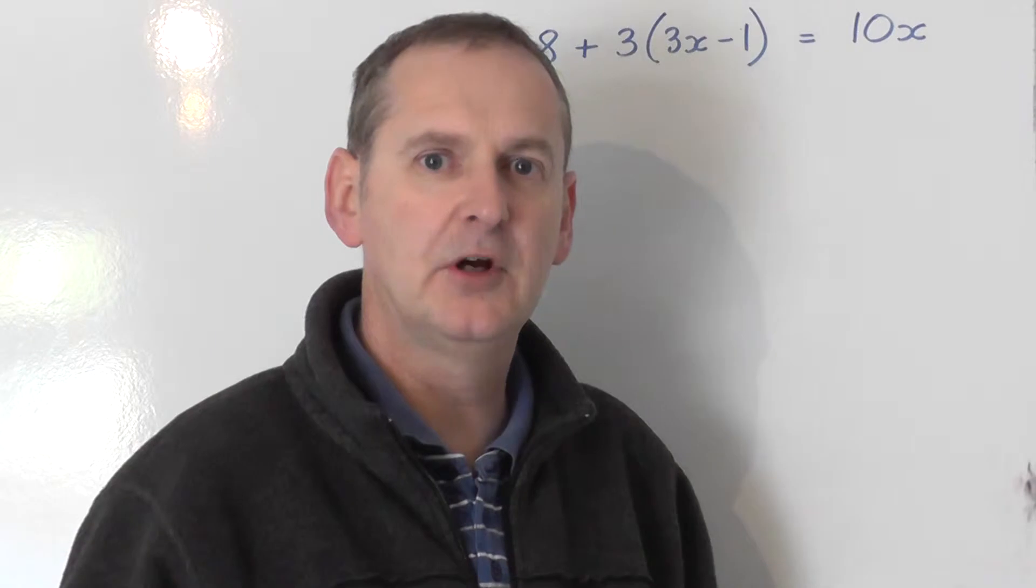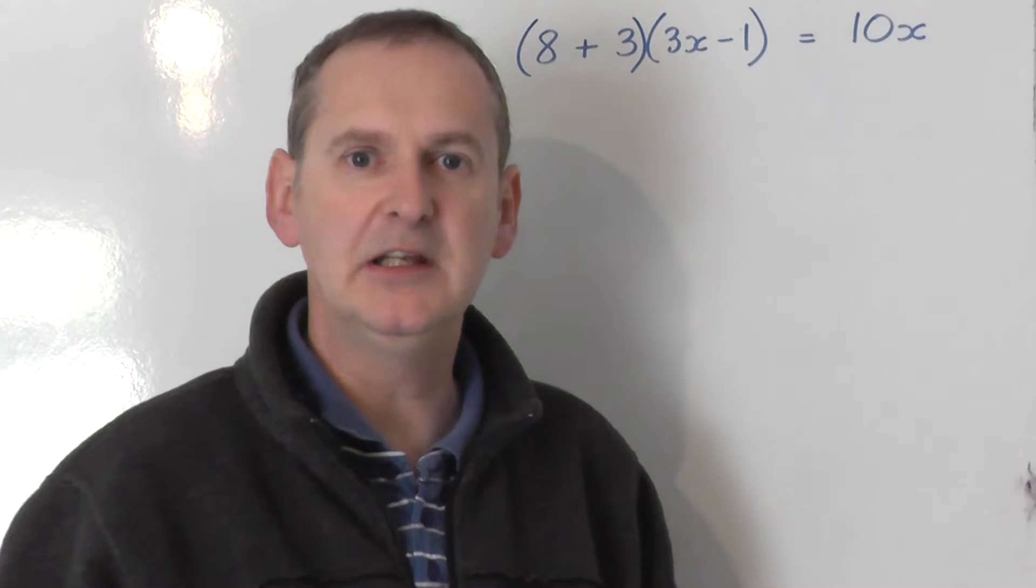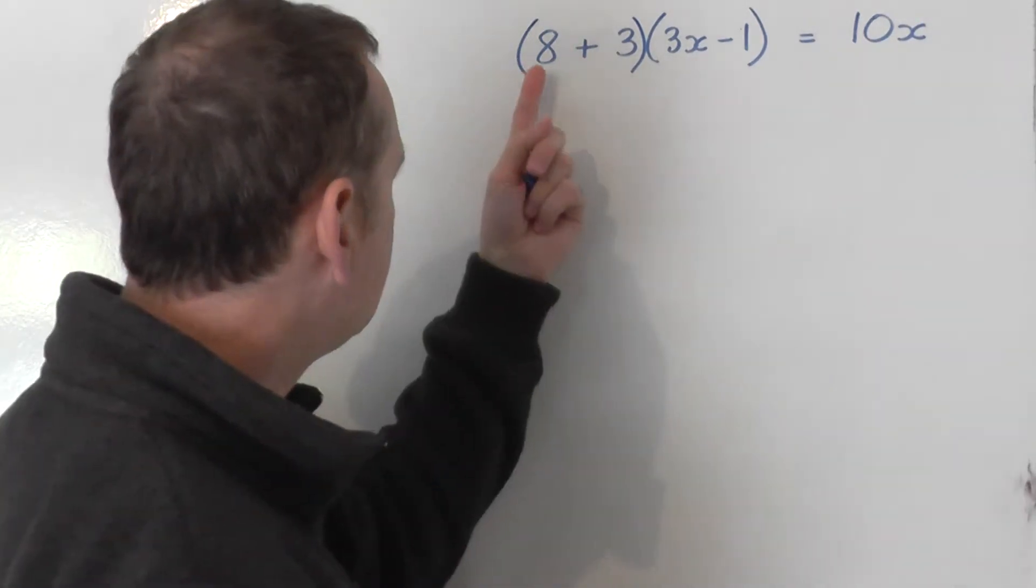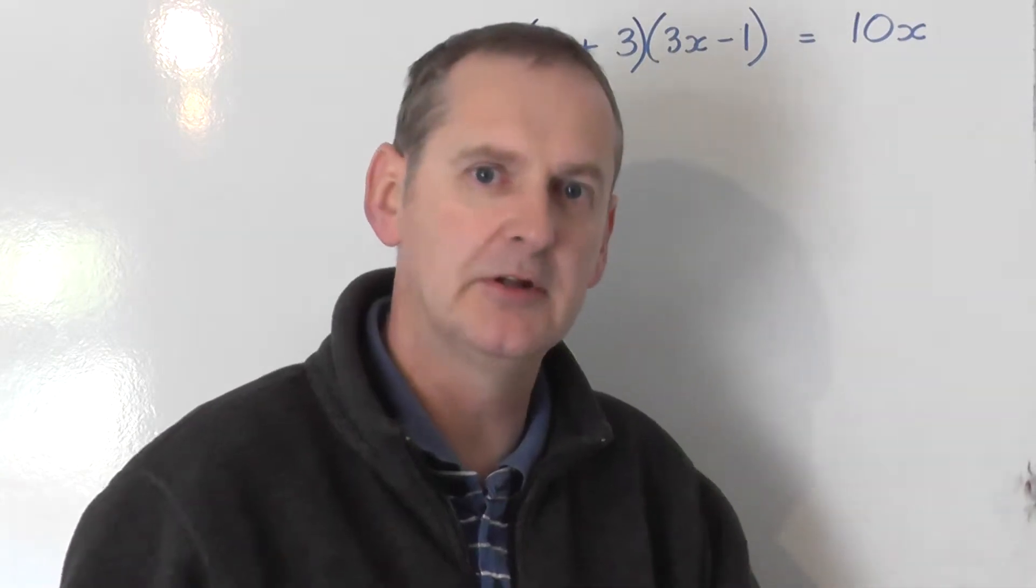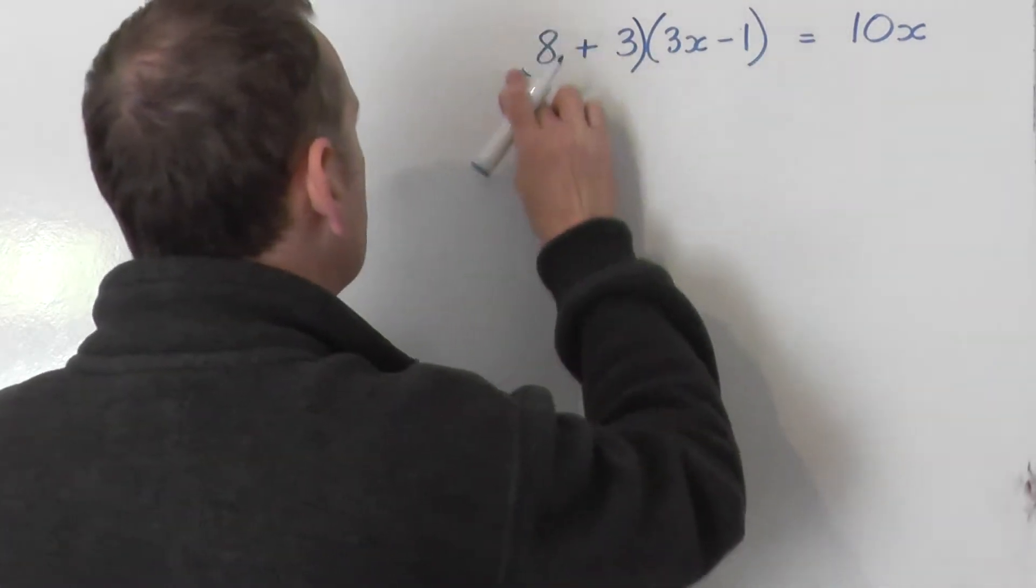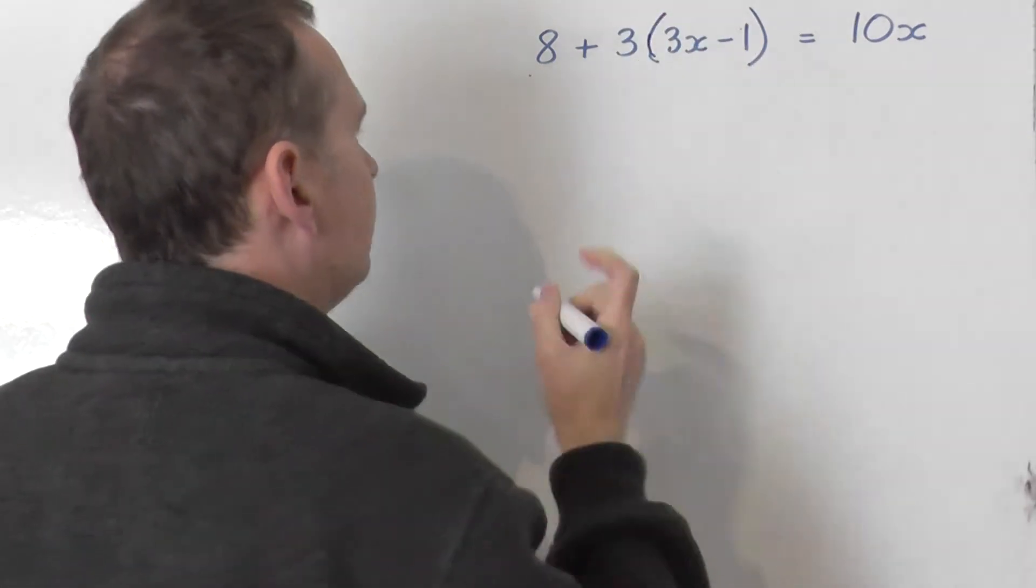That is not what we've got because if you were supposed to do that there would be a bracket around the 8 and the 3 which would tell you that you need to add the 8 and the 3 together first to get 11 and then say 11 lots of the bracket. That bracket was not present so we do not have that. But what we need to do is the following.